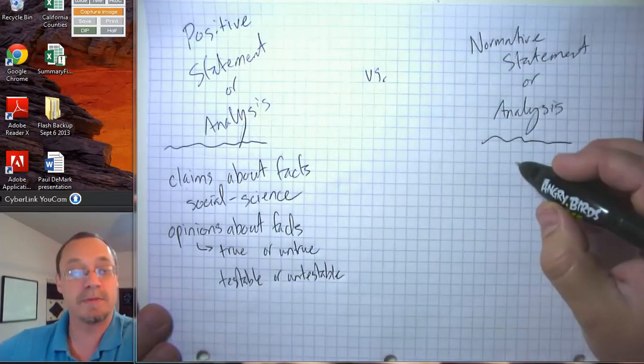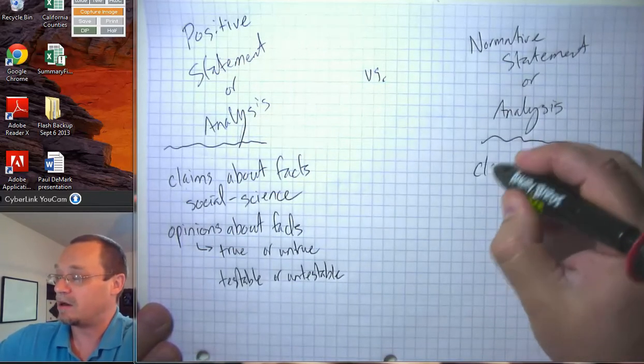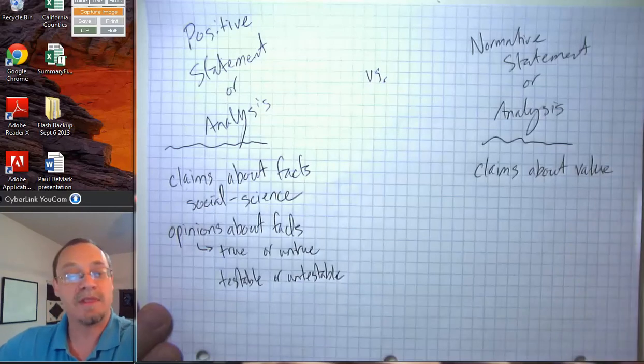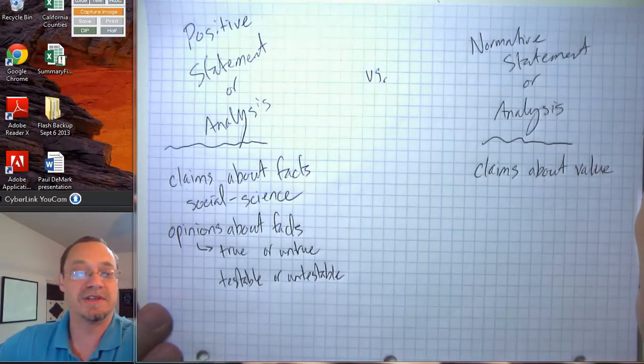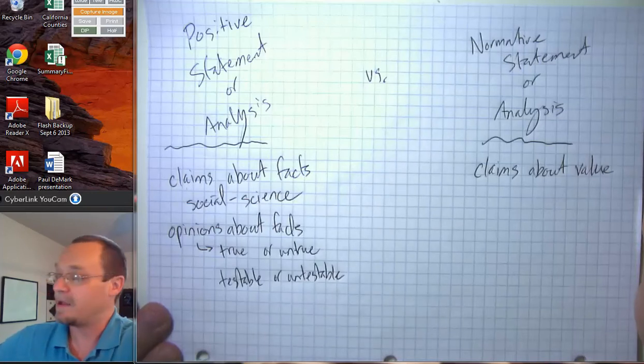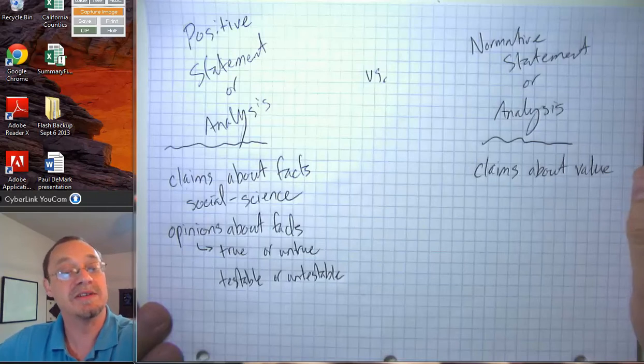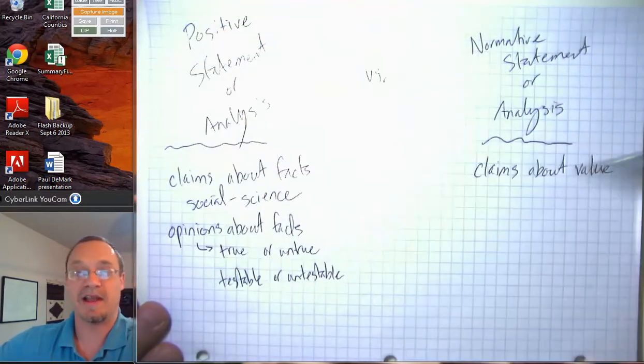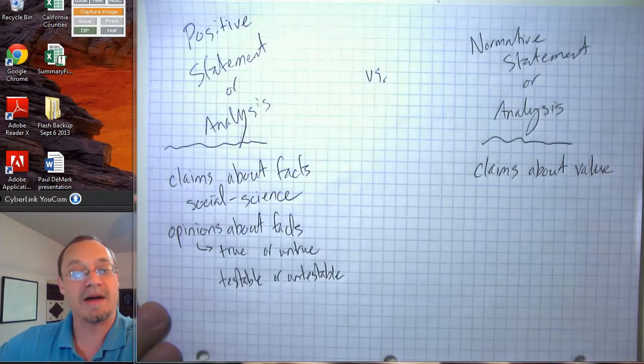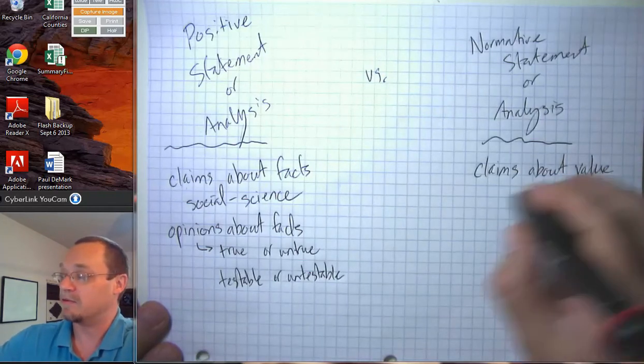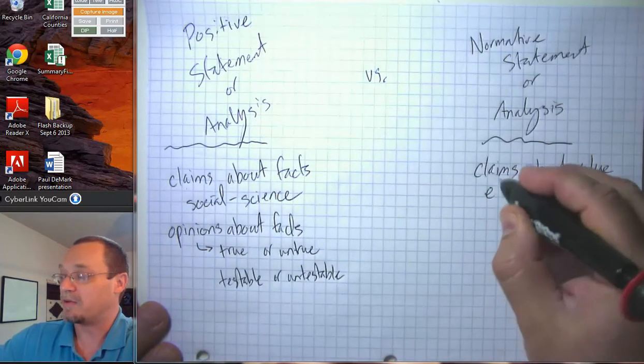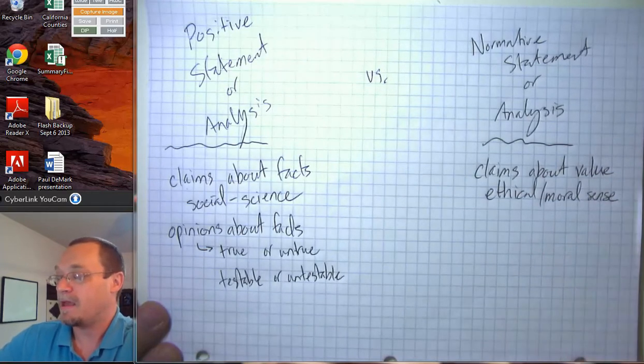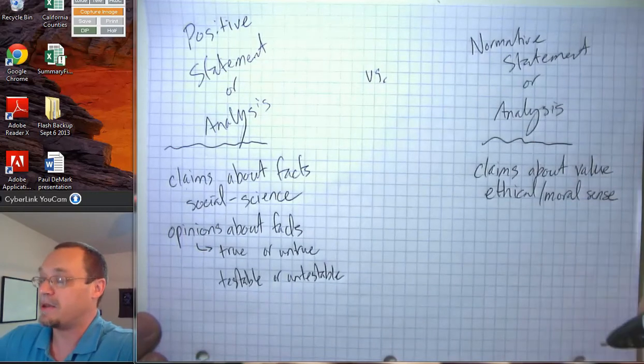This is in contrast to normative statements or normative analysis, which are claims about value. And when I say value here, I don't mean value in the sense of price. There's an old joke that an economist is someone who knows the price of everything and the value of nothing. So claims about value, we mean value in a sort of ethical, moral sense. Whether or not these are opinions, they are value judgments.